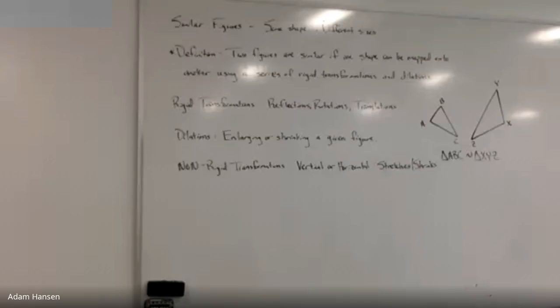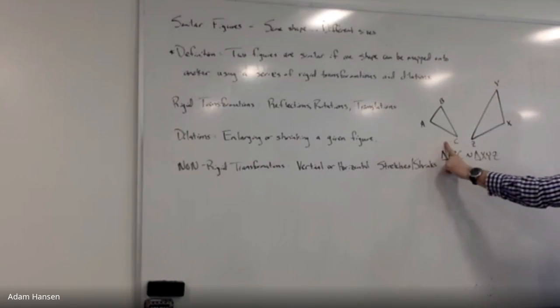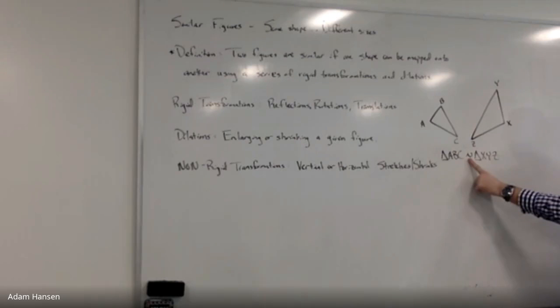Here's an example of two similar triangles. Triangle ABC is similar to triangle XYZ. The notation for similar figures is this little kind of squiggle in the middle, almost looks something like a tilde from Spanish. That is the symbol for similarity in two shapes.